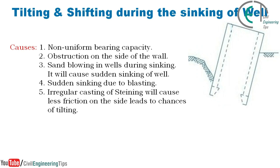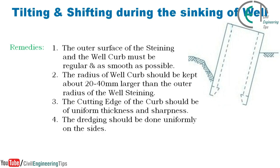Tilting and shifting may happen during the sinking of the well. The causes of shifting and tilting are: non-uniform bearing capacity, obstruction on the side of the wall, sand blowing in wells during sinking which causes sudden sinking of the well, sudden sinking due to blasting, and irregular casting of steining which causes less friction on the side, leading to chances of tilting.